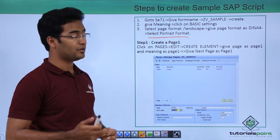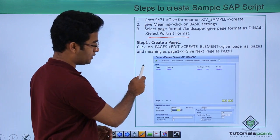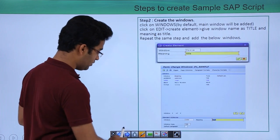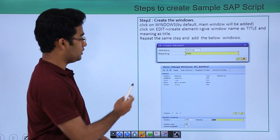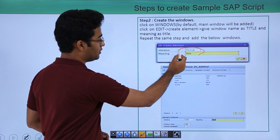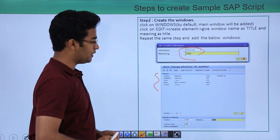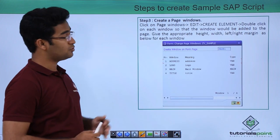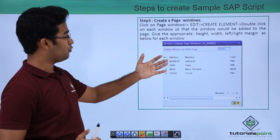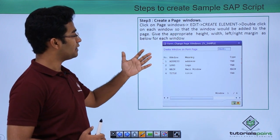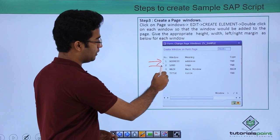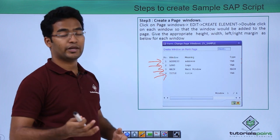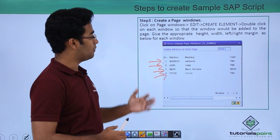The first step is to create a page. Here we are creating our pages — this would be page one and we have to provide the next page. The second step is to create windows. We are creating windows; the title would come here. There is an address, logo, main, and title window. The next step is to create page windows — we go to edit, create element, and double-click on each window to add it to the page, then provide appropriate height, width, and margin.